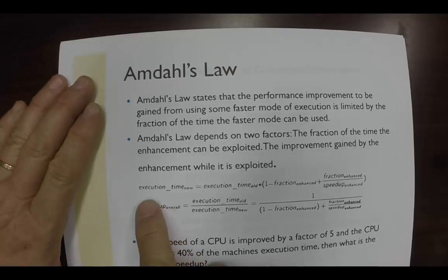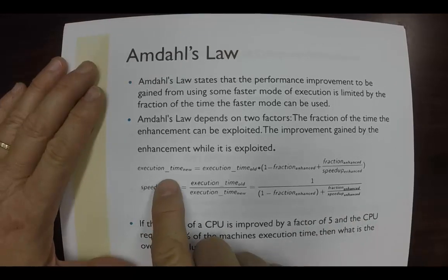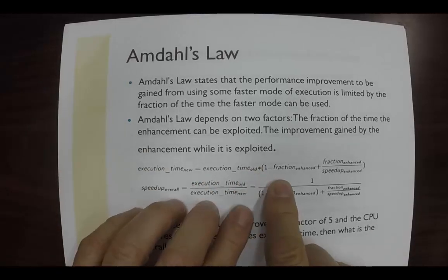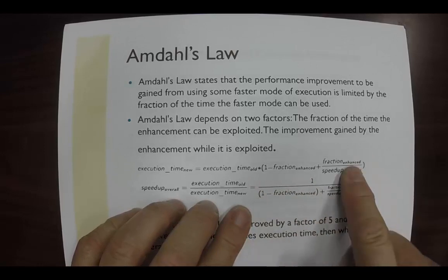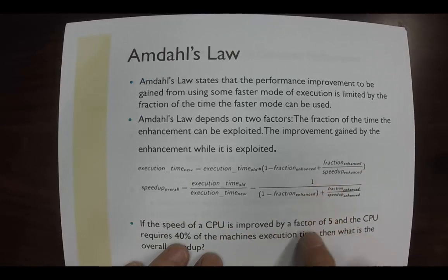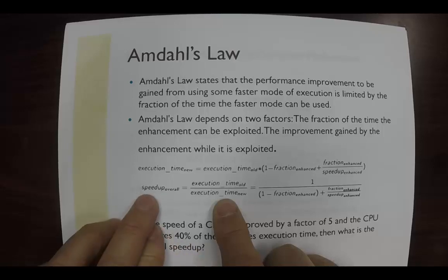Now the equation looks like this. The new execution time is equal to the execution time of the old one times, in parentheses, one minus the fraction enhanced plus the fraction enhanced over the speed of enhanced. Now this formula can be reworked into one over one minus fraction enhanced plus the fraction enhanced over the speed up enhanced, which gives you the execution time of the old one divided by the execution time of the new one, and that's the overall speed up.